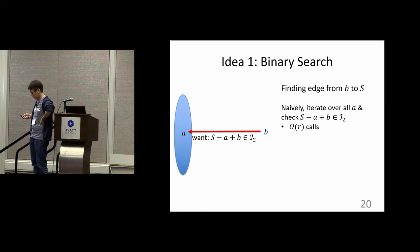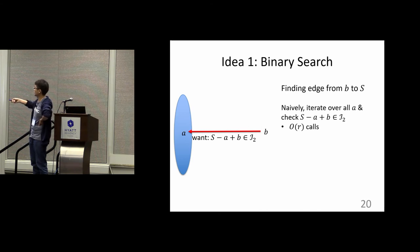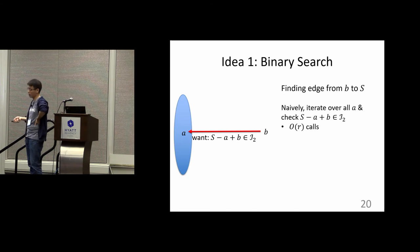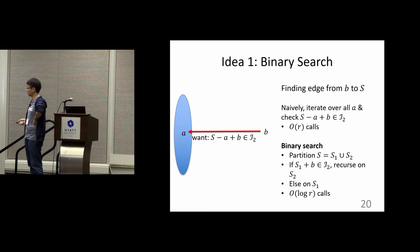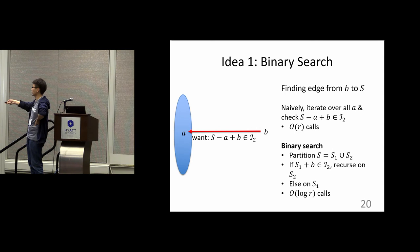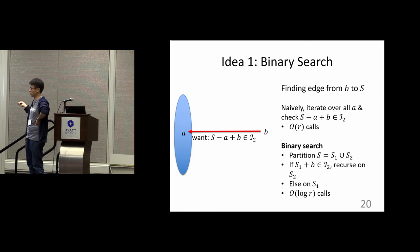Here is the binary search idea. Given a vertex B on the right, we want to find an edge going from B to some vertex A on the left. Naively you iterate over all left vertices — that's linear time and too slow. Instead, divide the left-hand side into two parts S1 and S2. Check whether you can add B to S1 and still preserve independence: if yes, recurse on S2 to find the neighbor; otherwise try the other part. This is a binary search procedure requiring only log N oracle calls.